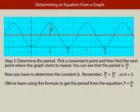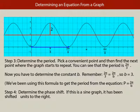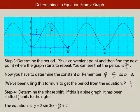Step 3 is to determine the period. Pick a convenient point on the y-axis and find the next point where the graph starts to repeat — you can see that's at 2pi over 3. Now determine constant b: 2pi over 3 equals 2pi over b, so by inspection b is 3. We know the period, so we equate 2pi over b to the period and solve for b. Step 4 is to determine the phase shift. This is a sine graph, so you can see it's been shifted pi over 6 units to the right. So our equation is y equals 2 (amplitude) sine 3 (b) times (x minus pi over 6) (phase shift) plus 2 (vertical displacement).